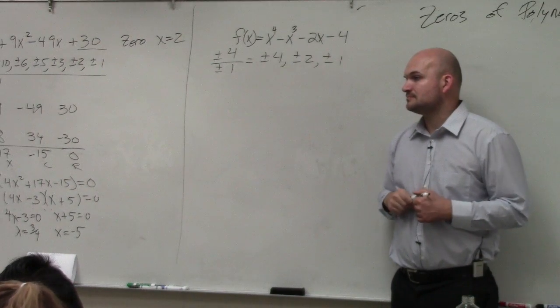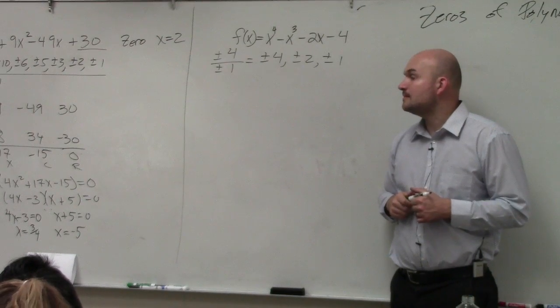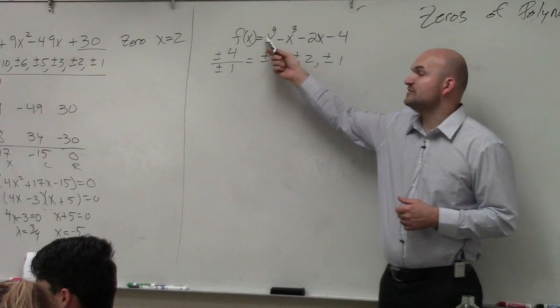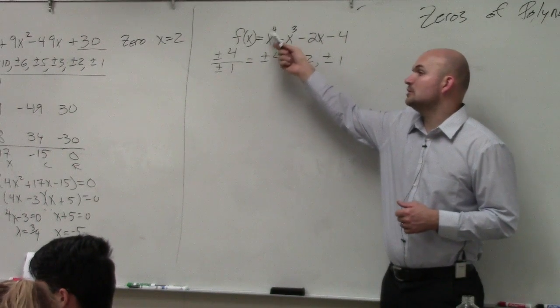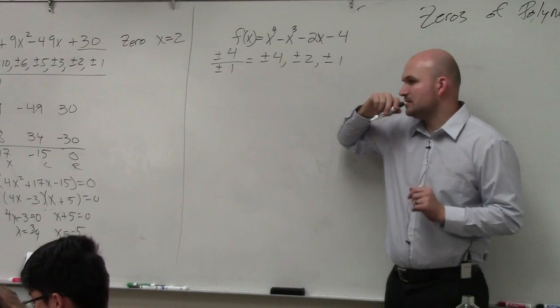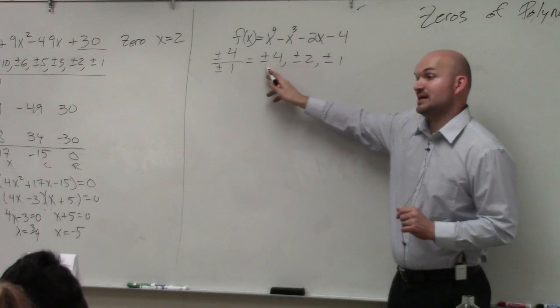Student asks: But since the degree is 4, does that mean that there are 4 zeros? Yes. But there's only 3 options. No, there's 6, plus and minus.